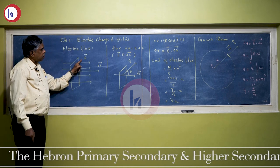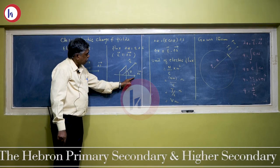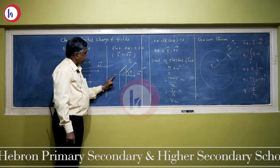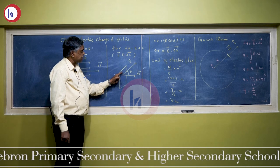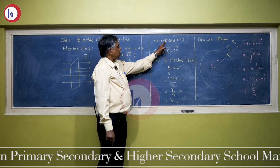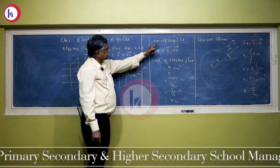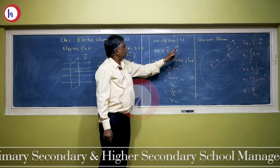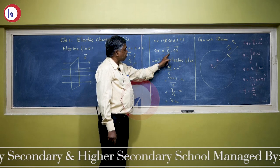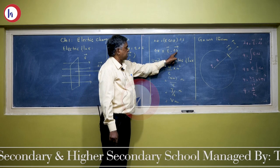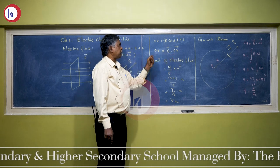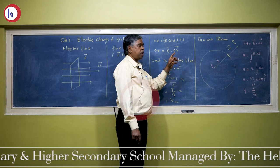Suppose the electric field and area vector are not parallel. See this figure — the electric field goes in this direction and the area vector goes in this direction. In this case, how do we find the electric flux? Electric flux equals the component of electric field, that is E cos theta, multiplied by delta S. Therefore, E cos theta times delta S can be written in terms of dot product as E vector dot delta S vector. This is the general form of electric flux.